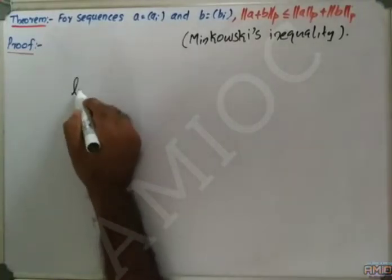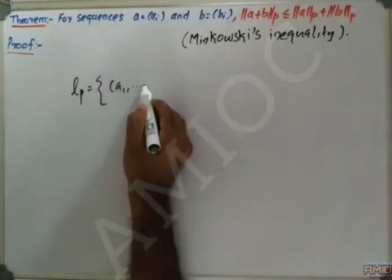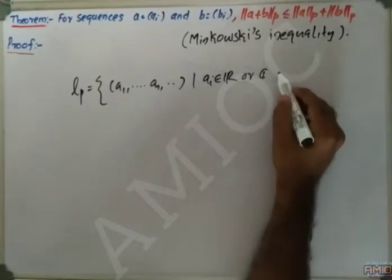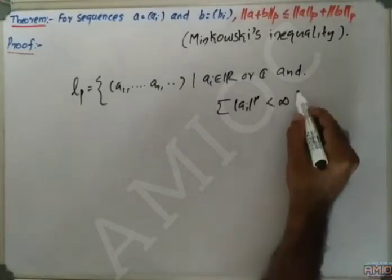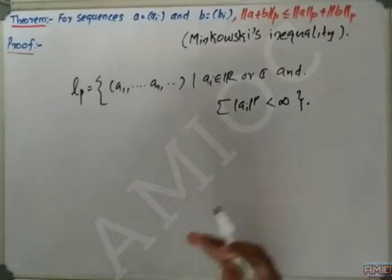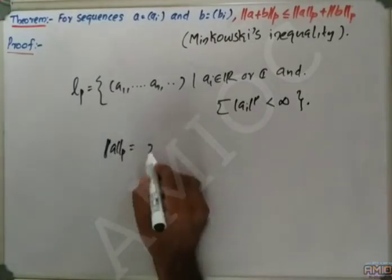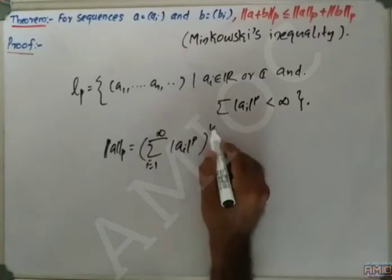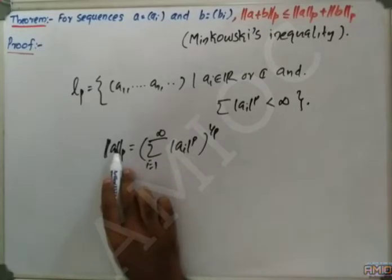We are very much concerned about Lp spaces, which is a scalar space of scalar sequences — that is, the set of all (a_1, a_2, ...) such that a_i belongs to R or C, and the summation of |a_i|^p is finite. This is the Lp space. We define a norm in this space such that the p-norm of a equals (Σ|a_i|^p)^(1/p).